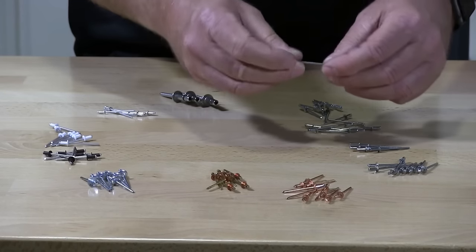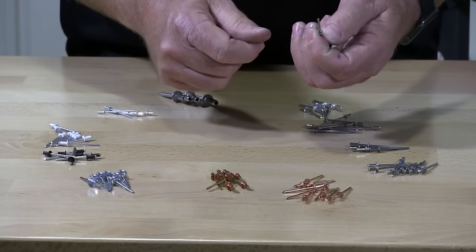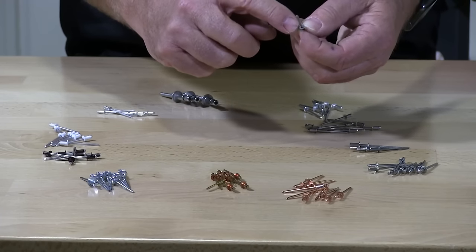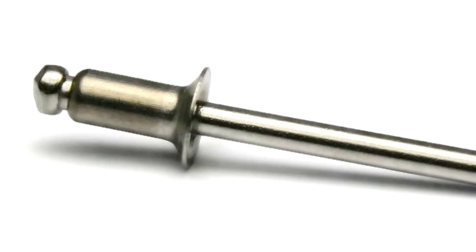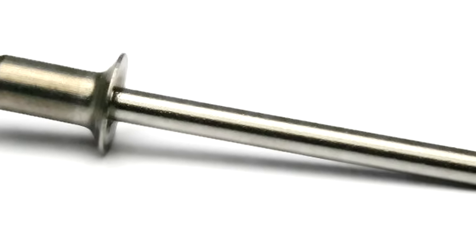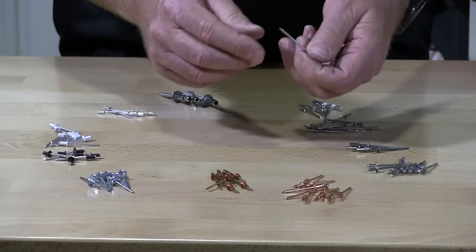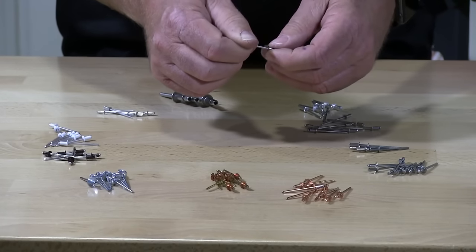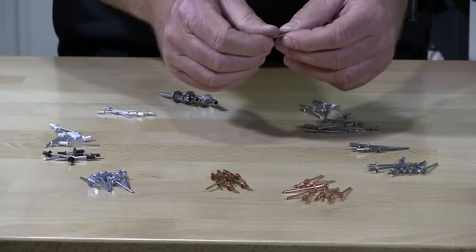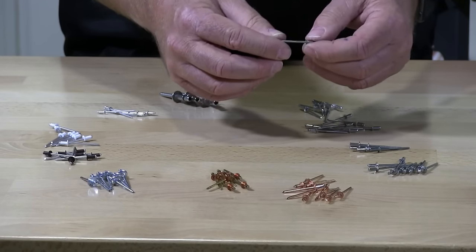These are also stainless countersunk pop rivets. So you'll see that there's a, I believe it's a 33 degree hat on here so when you install this rivet it'll be flush with the material. These are installed in a lot of things like tracks that you're putting a rail in or something along that that you just don't want any type of head sticking up.